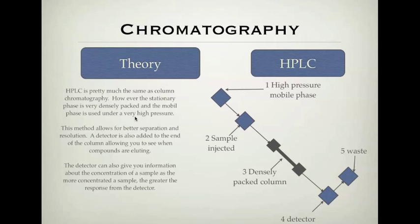This method allows for better separation and resolution. A detector is also added at the end of the column which allows you to see when compounds are eluting. Once your sample has run through the column and separated out into your mixtures, the detector actually sets off and gives you a reading when something elutes. You can have a recording of when this happens. Having the same column will allow you to better compare your results to things you find in textbooks and literature values.